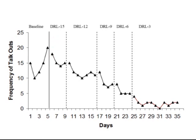On this graph I'm using a dashed line every time we change the intervention, and there's a solid line between baseline and intervention. These are called phase change lines — they indicate on a graph when you've made a change in your program, and you label them to show what that change was. So every time he met the criteria for reinforcement, we lowered the DRL limit until we got it down to three. If he had three talk-outs per class period, he could do a little presentation, and we decided to leave it there.